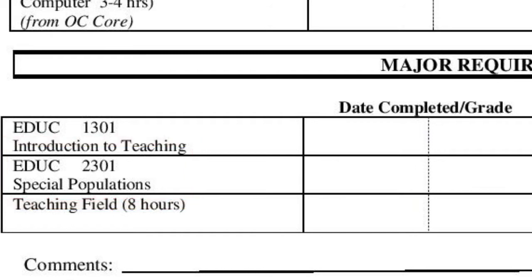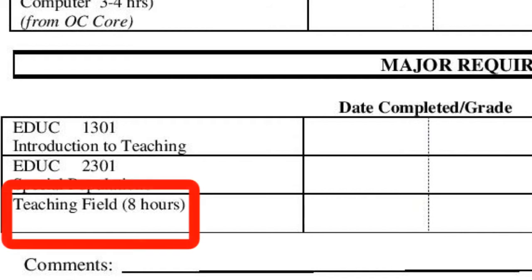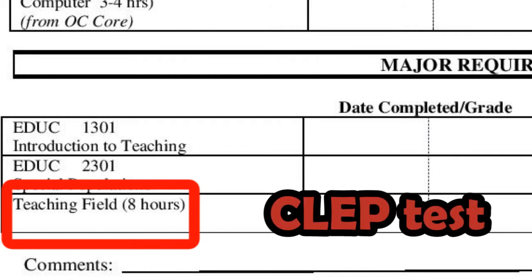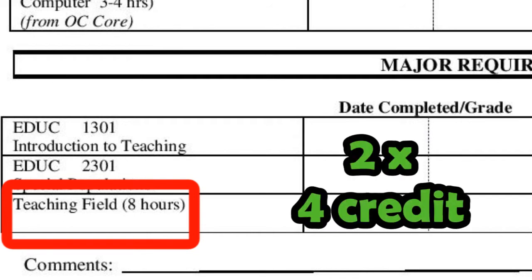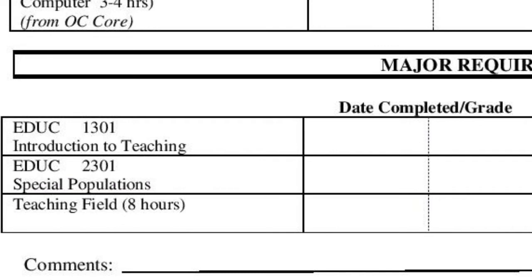The last requirement for your AAT all-level Spanish degree is 8 hours in your teaching field. This means you can either take the Spanish CLEP test in the testing center at Odessa College, or take two 4-credit Spanish classes on campus. What is wonderful about taking the Spanish CLEP test is that you can earn four classes of Spanish with one test. When we meet, I will explain the Spanish CLEP test in detail.